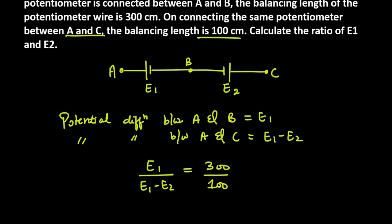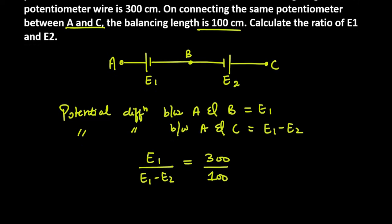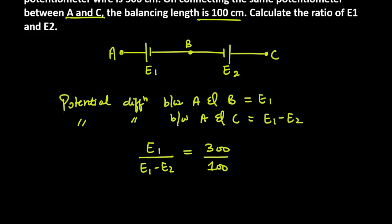I have to find the ratio of E1 and E2. E1's value is 300, and E1 minus E2's value is 100.